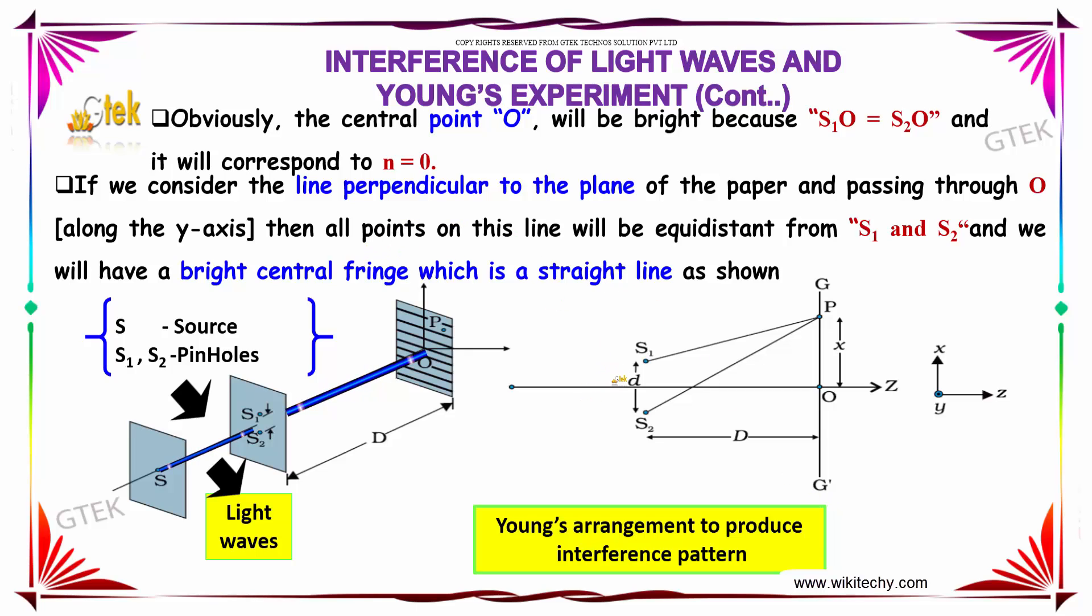Let's discuss more on the interference of light waves and Young's experiment. Obviously, the central point O will be bright because S1O = S2O, which corresponds to the value n = 0.